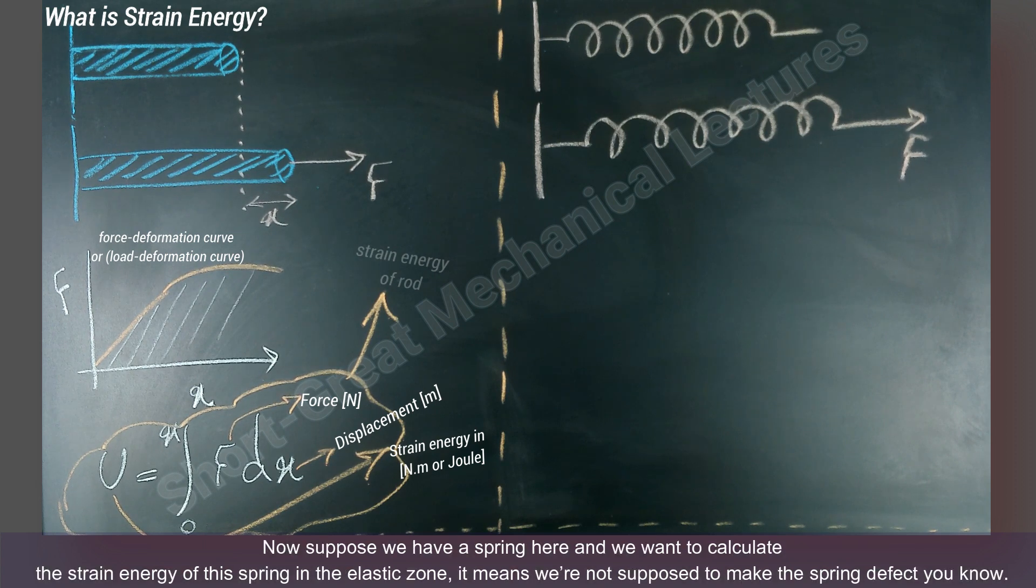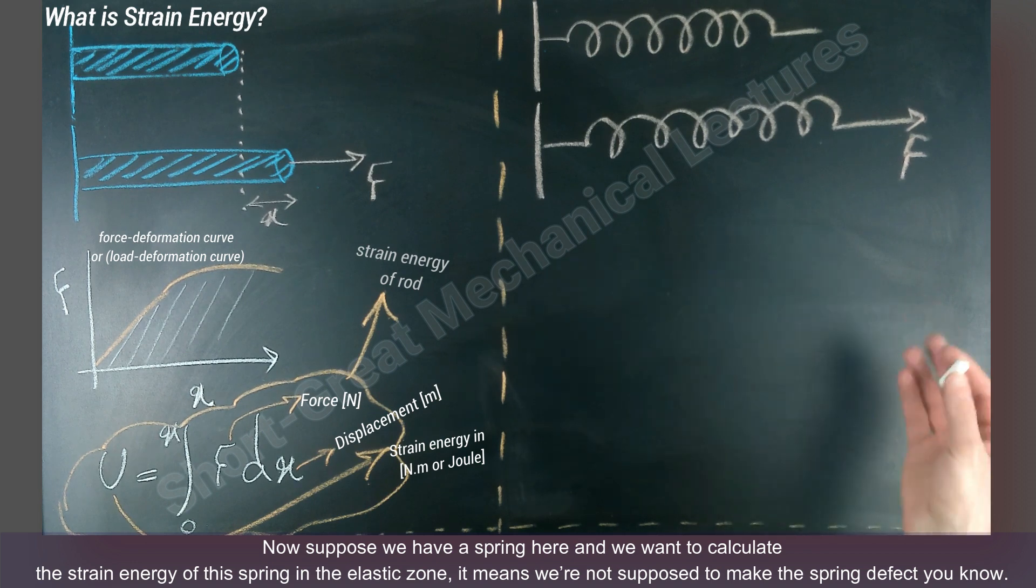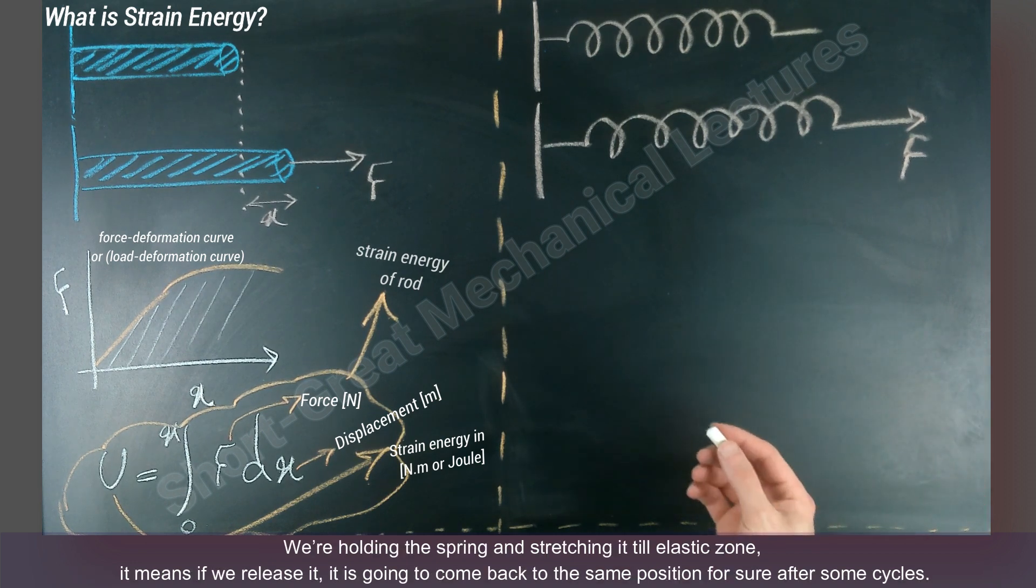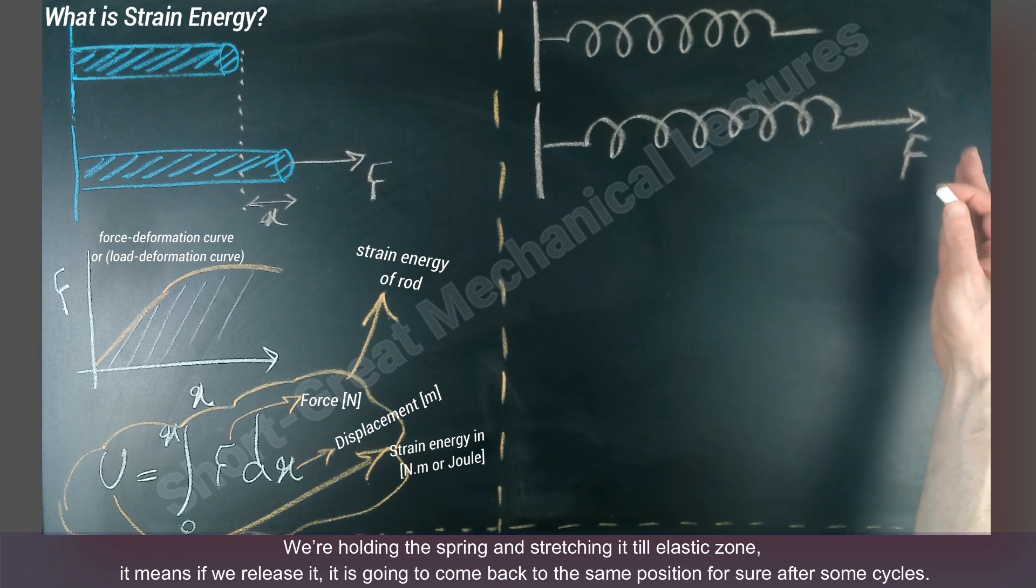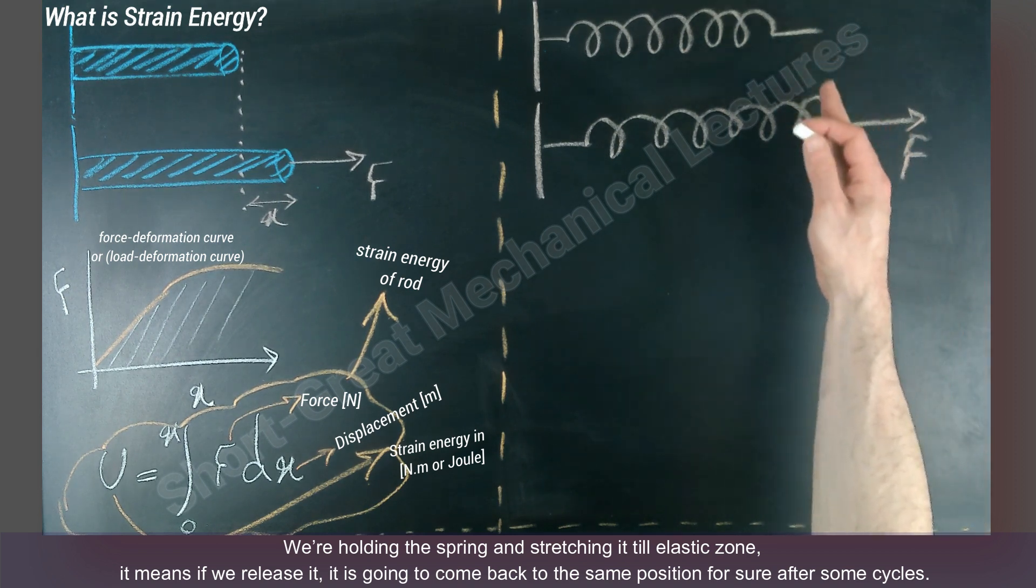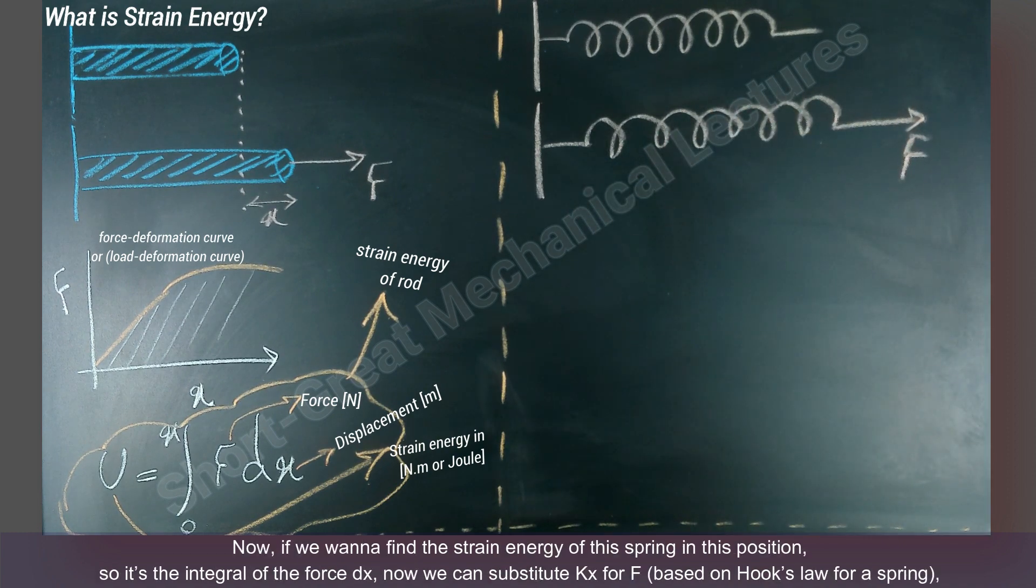Now suppose we have a spring here and we want to calculate the strain energy of this spring in elastic zone. It means we're not supposed to make the spring defect, you know. We're holding the spring as you can see and stretching it till elastic zone. It means if we release it, it's going to come back to the same position for sure after some cycles. Now you want to find the strain energy of this spring in this position.